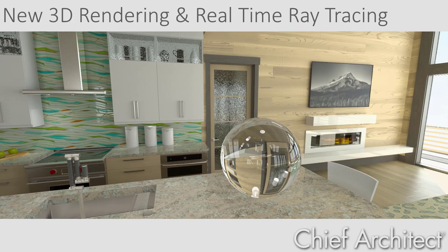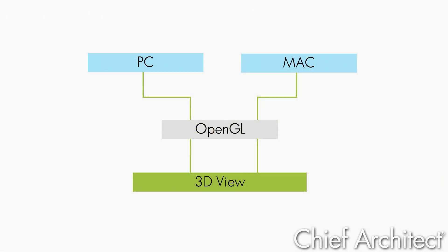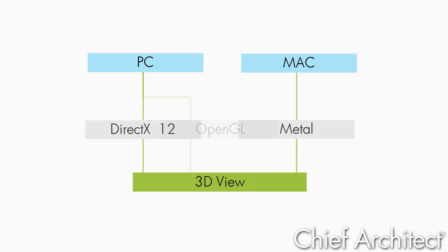Why an entirely new rendering engine? In 2018, Apple announced it would not be supporting OpenGL in the future. OpenGL is a high-level rendering interface for cross-platform applications, and it really was the first 3D API available around the same time Chief Architect originated. For continued support on the Mac platform, we needed to make a change.